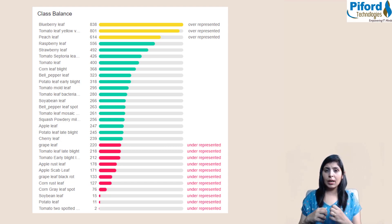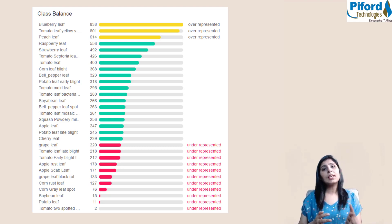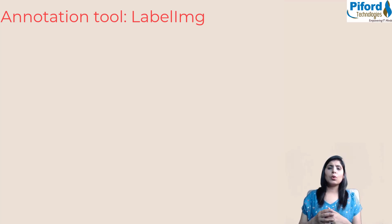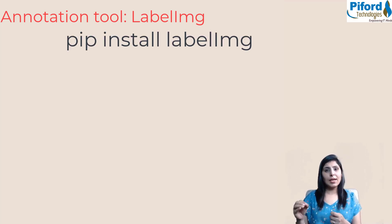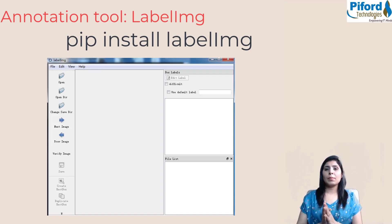If you're working on a real-time project, you should balance your dataset first. You can do this by performing data augmentation to increase sample count, or by collecting images from the internet and annotating them in YOLO format. For annotation, you can use the LabelImg tool — it's quite easy to use. Install it with pip install labelimg, then open it by typing labelimg in the command prompt to label your images.